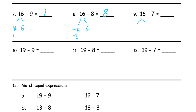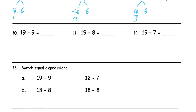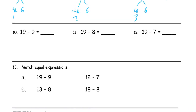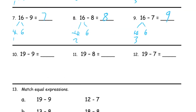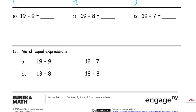16 is 10 and 6. And if I take away 7 from 10, I'll have 3. So 6 and 3 — well, if 6 and 2 is 8, then 6 and 3 has to be 9. Or you could just count up: 7, 8, 9 — 3 more.